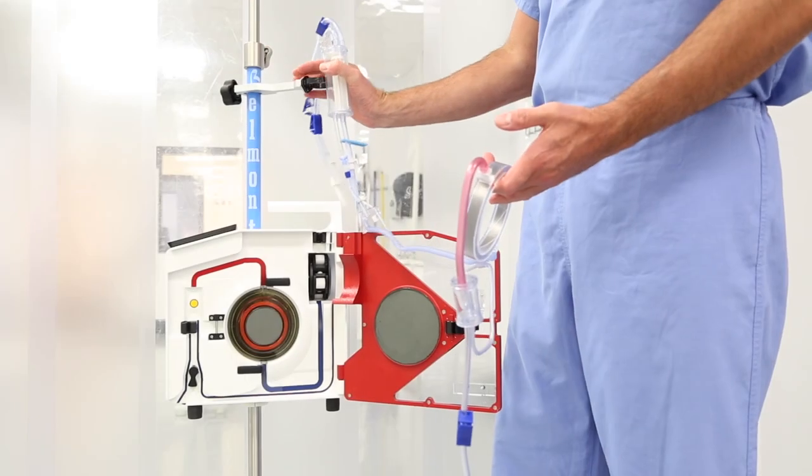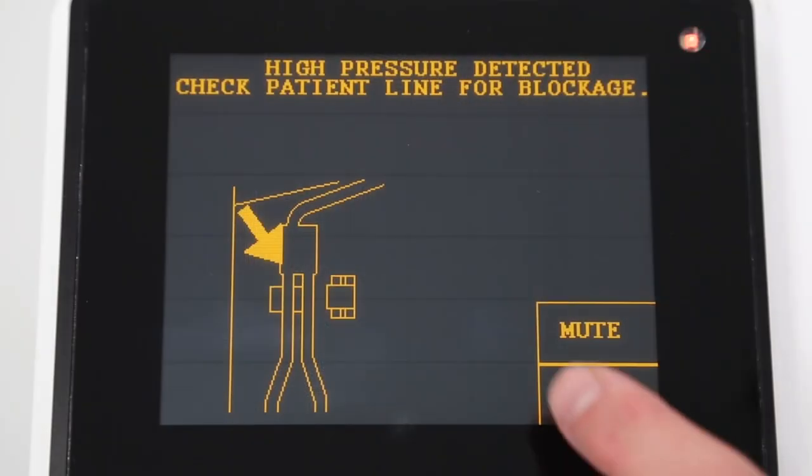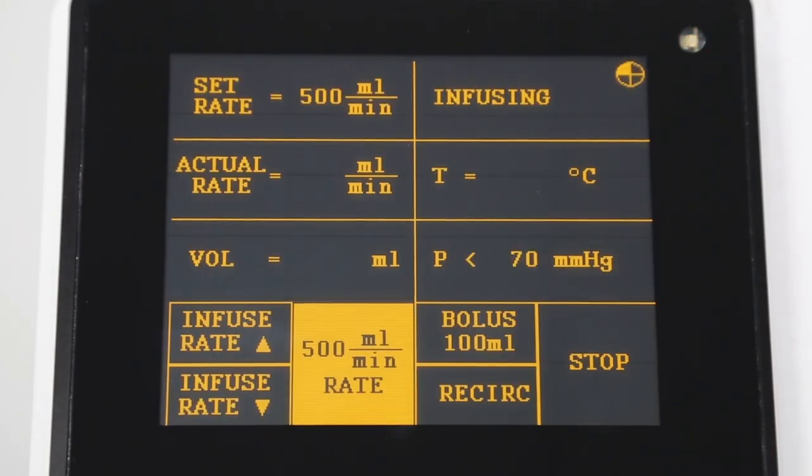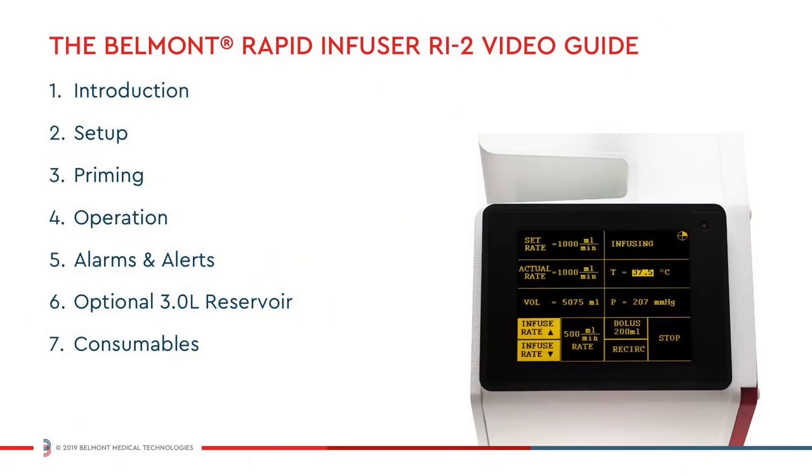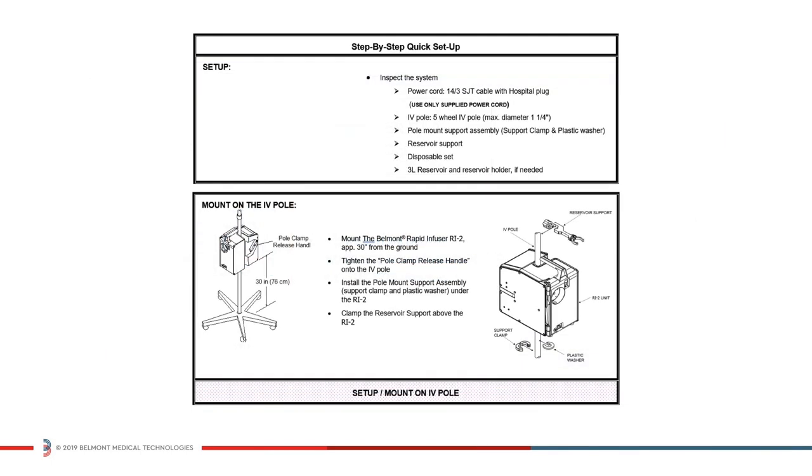In this series of videos you'll learn how to install, operate, and troubleshoot your Belmont Rapid Infuser RI2. Watch all the videos or navigate to specific topics you're interested in. You can also find detailed information in your operator's manual as well as quick reference guides.